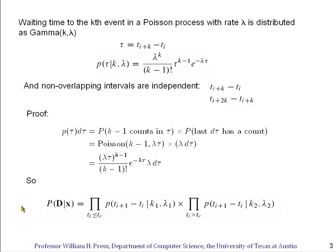The forward model of the whole experiment — the probability of the data given the unknown parameters — takes the probabilities of all intervals before critical time T_C, which have parameters k1 and lambda_1, and multiplies them together since they're independent. Then it takes all intervals after T_C with parameters k2 and lambda_2 and multiplies those together. This is a complete model: given t_c, k1, lambda_1, k2, lambda_2, and the list of times, we can evaluate the probability of that particular data set.